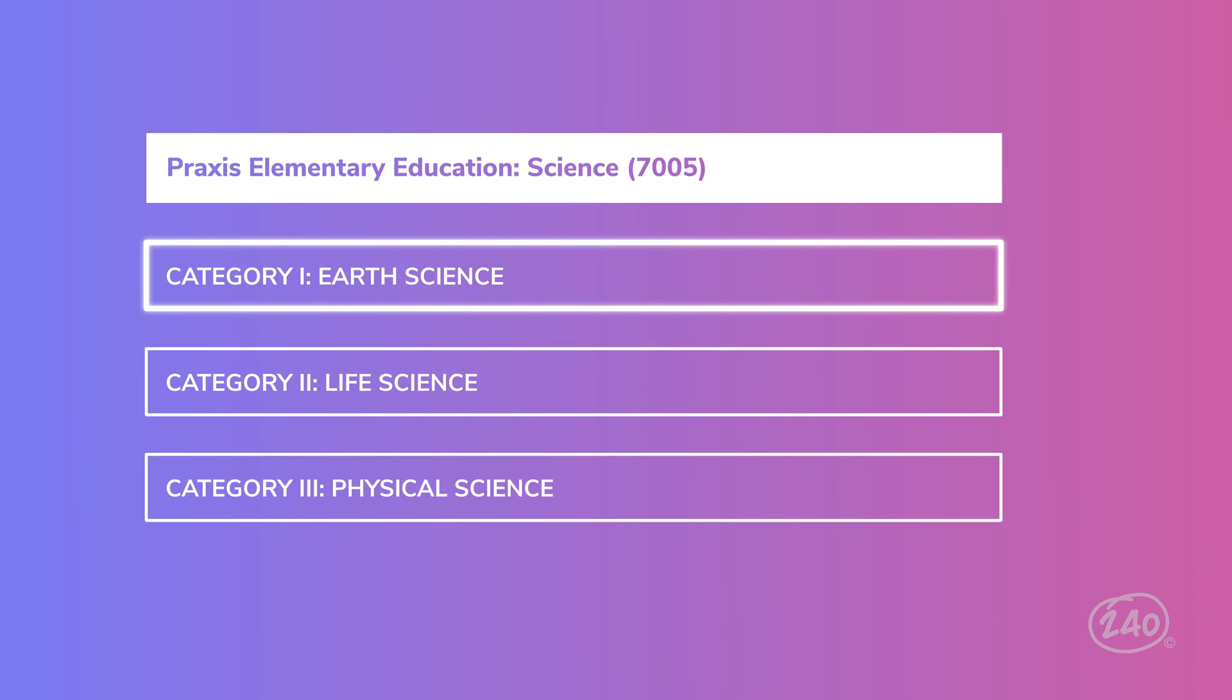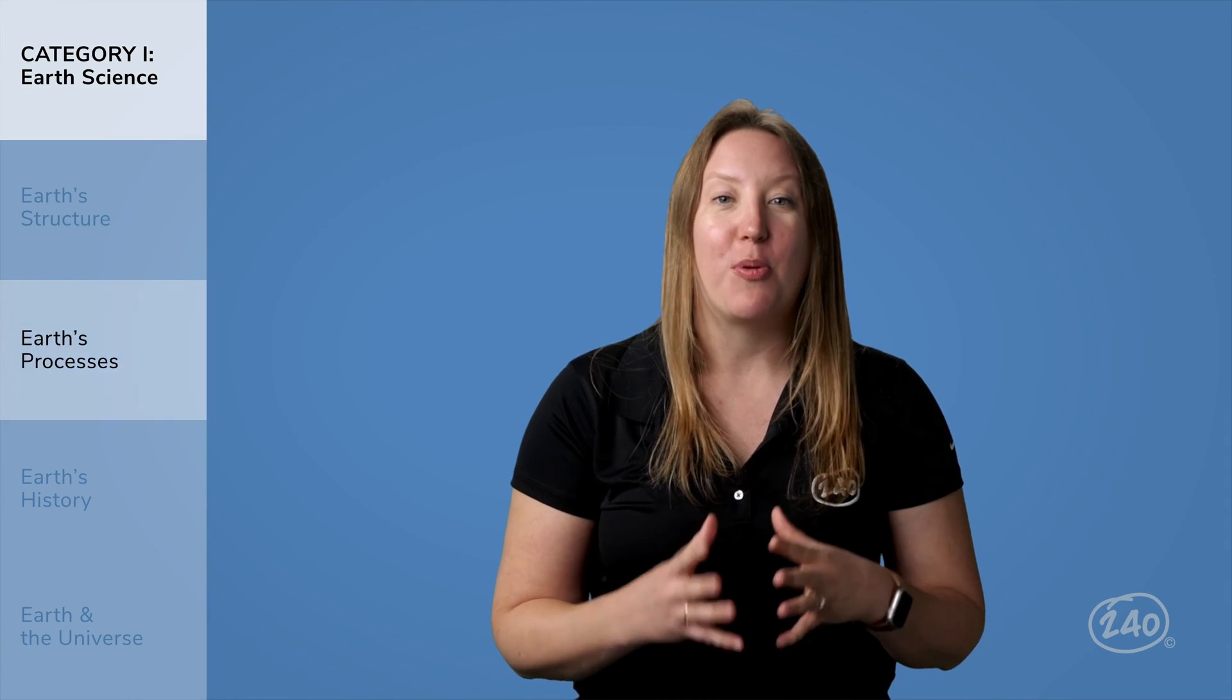Let's start from the top with Earth Science, which actually covers Earth and Space Science. And you live on Earth, which is in space, so you're naturally great at this category. The big things you're going to see here include Earth's structure, the processes and cycles that occur on its surface, its history, and how Earth relates to the rest of the universe. So we can kind of split it up into what's on Earth and what's not on Earth.